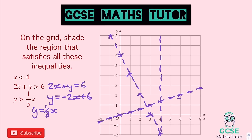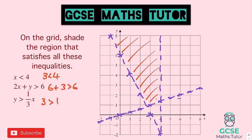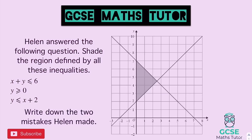Testing coordinate (3, 3): 3 is less than 4 — okay. 2(3) plus 3 is 9, which is greater than 6 — okay. 3 is greater than one-third of 3, which is 1 — okay. All three work, so the shaded region is that larger quadrilateral shape at the top. It worked out straight away on the first try.